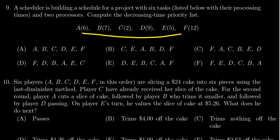And the six tasks are listed down below: A, B, C, D, E, F. They have their various processing times. We have A(6), B(7), C(2), D(9), E(5), and F(12).